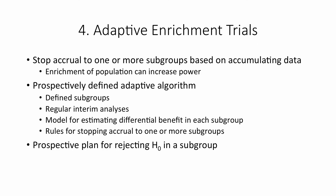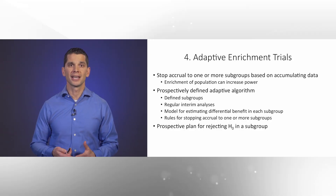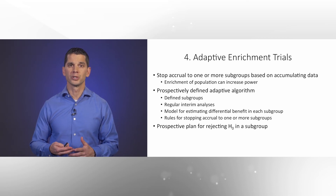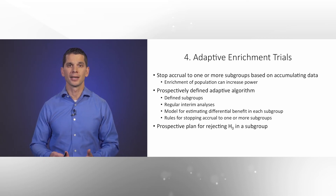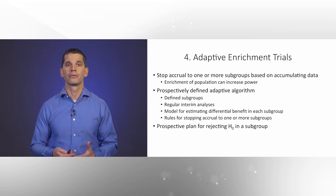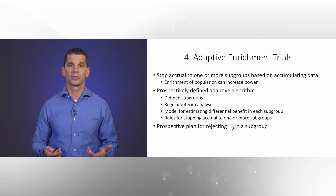The fourth strategy is adaptive enrichment trials — trials with an adaptive algorithm where we stop accrual to one or more subgroups based on accumulating data, enriching the study population with patients most likely to benefit. Key features include a prospectively defined algorithm that defines the subgroups, specifies the timing of interim analyses, provides a model for estimating differential benefit in each subgroup, and includes rules for stopping accrual to one or more subgroups.